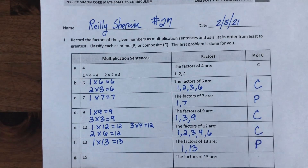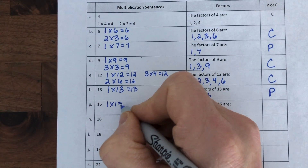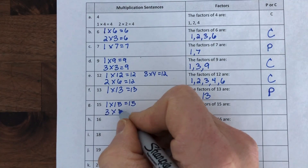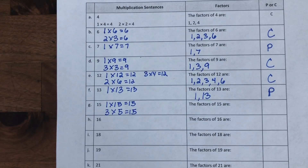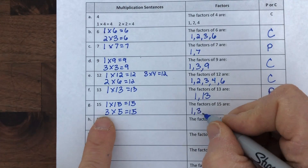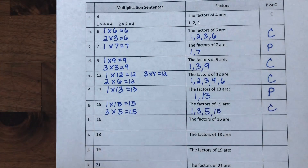Here's 15. Just because a number is odd, like 15, don't automatically assume it's going to be prime. I know it's one times 15. Two won't work because it's odd. Three? Yes — three times five equals 15. Half of 15 is seven and a half, so that's as far as we need to check. My factors are one, three, five, and fifteen — making it a composite number.